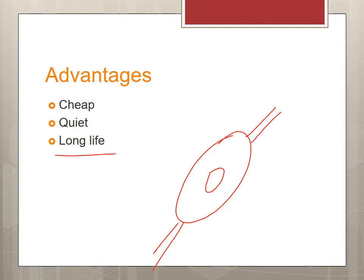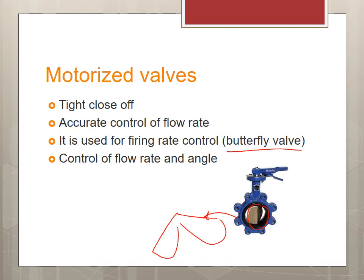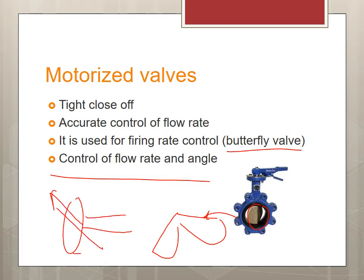Motorized valves are very flexible. As the name suggests, they are valves with a motor on them. They can provide tight close-off and also control the flow rate — they can be partially open or partially closed in different settings. It's also called a butterfly valve because of the wing shape. They have different firing rate settings and control the flow rate and angle of the flow going in. There is also a manual override to open or close it.